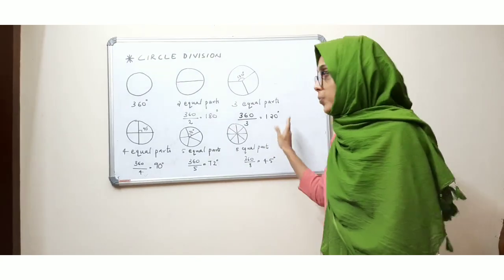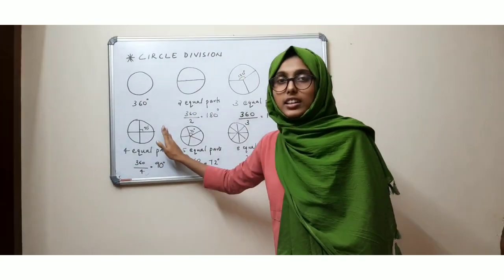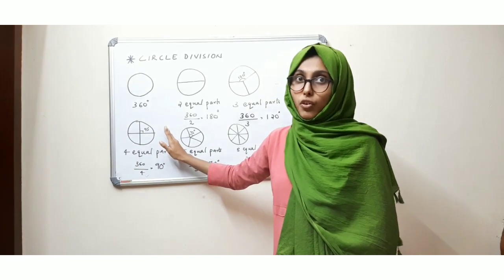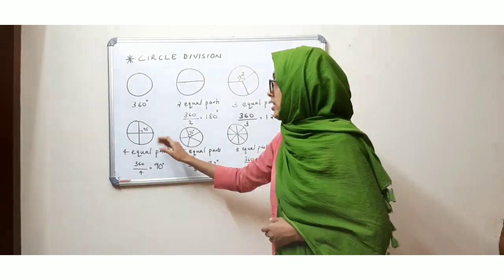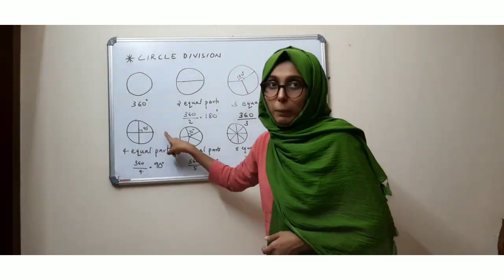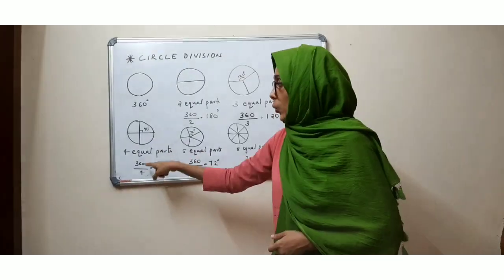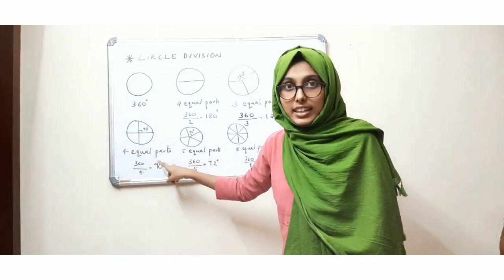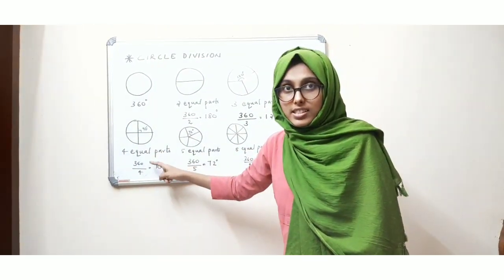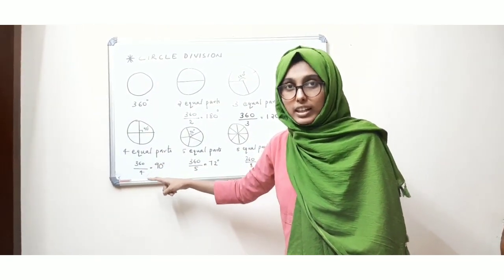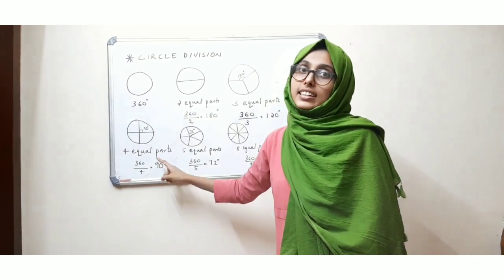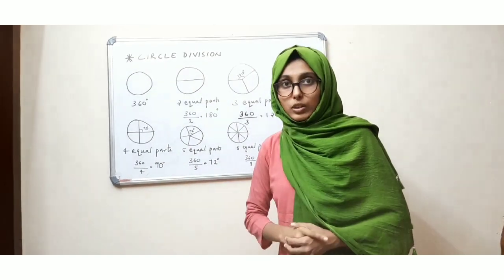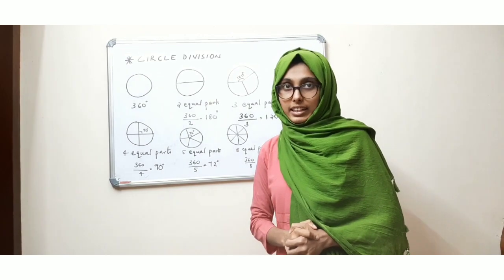Now I am going to divide the circle into four equal parts. One full circle is of 360 degrees. 360 divided by four is 90 degrees. So one part will be of 90 degrees.